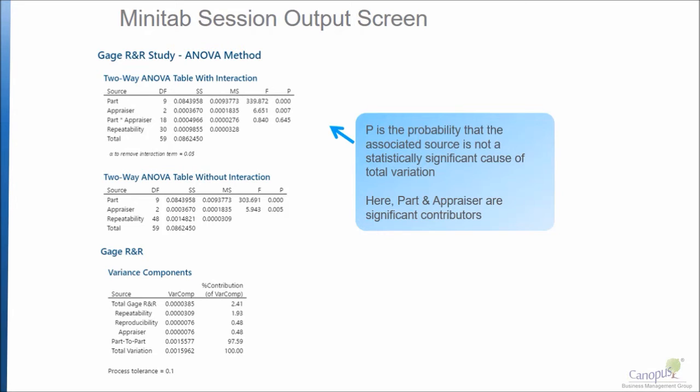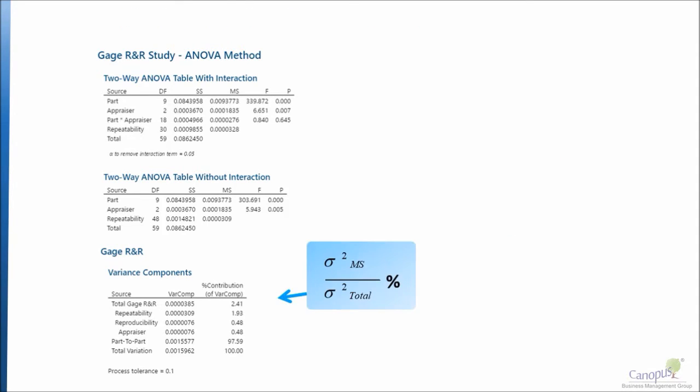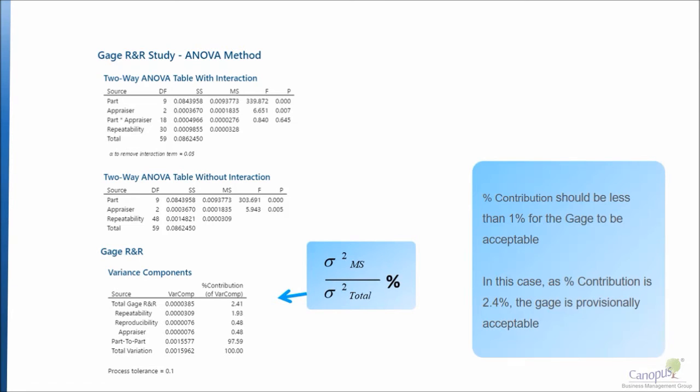As you recollect, we were talking about the importance of percentage contribution. We said the percentage contribution should be less than 1%, and anything greater than 1% but less than 9% is marginally acceptable.